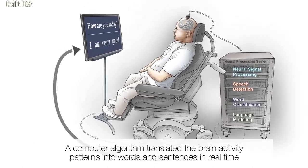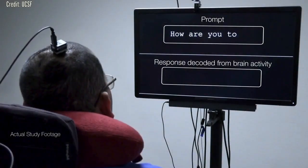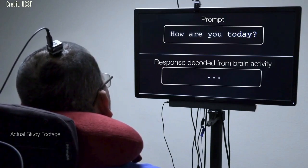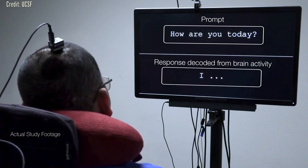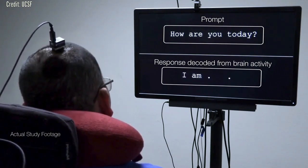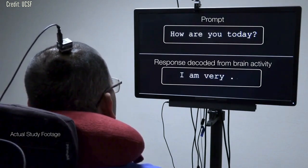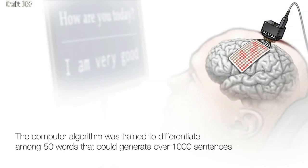Over the past decade, Chang's progress toward this goal was facilitated by patients at the UCSF Epilepsy Center, who were undergoing neurosurgery to pinpoint the origins of their seizures using electrode arrays placed on the surface of their brains. These patients, all of whom had normal speech, volunteered to have their brain recordings analyzed for speech-related activity. Early success with these patient volunteers paved the way for the current trial in people with paralysis.